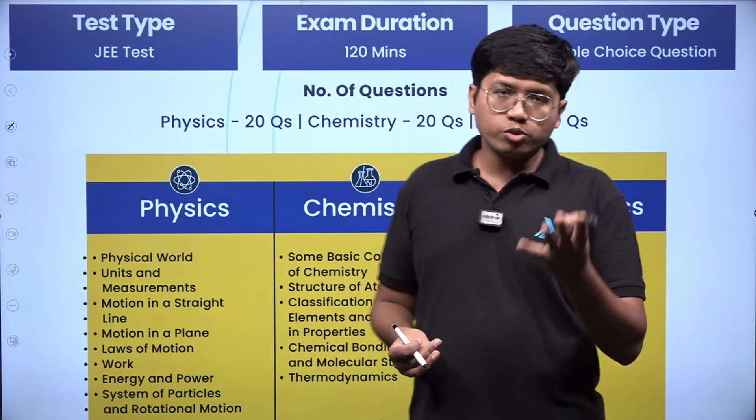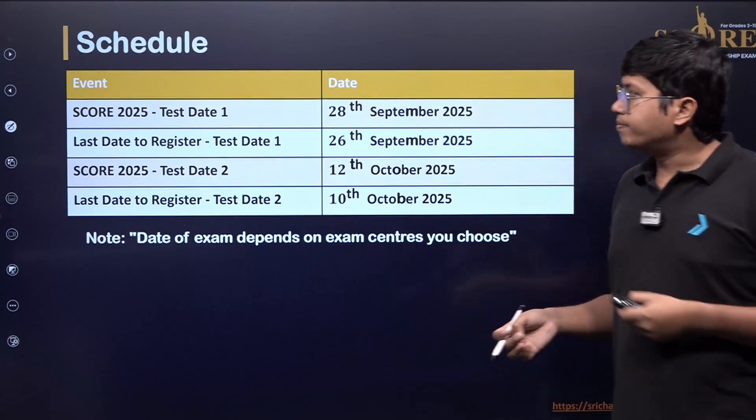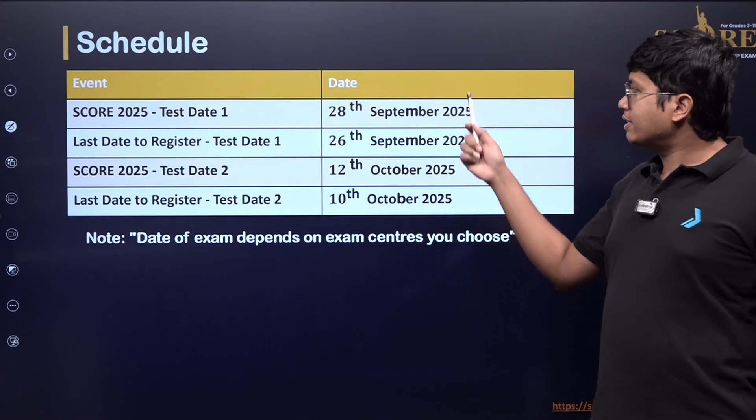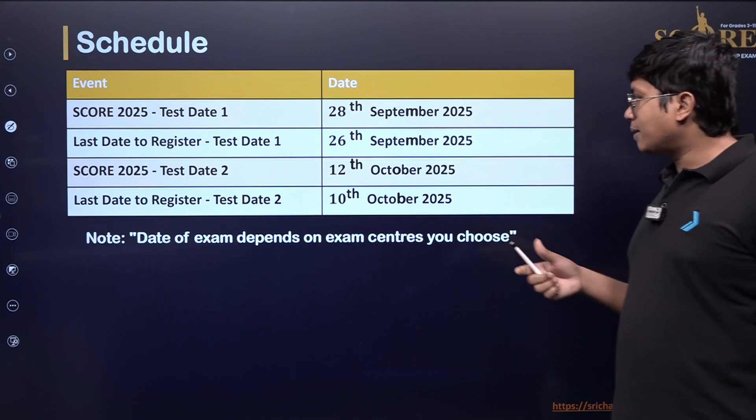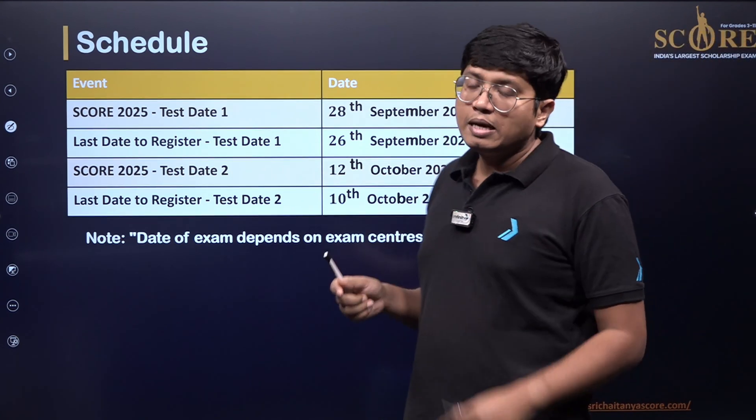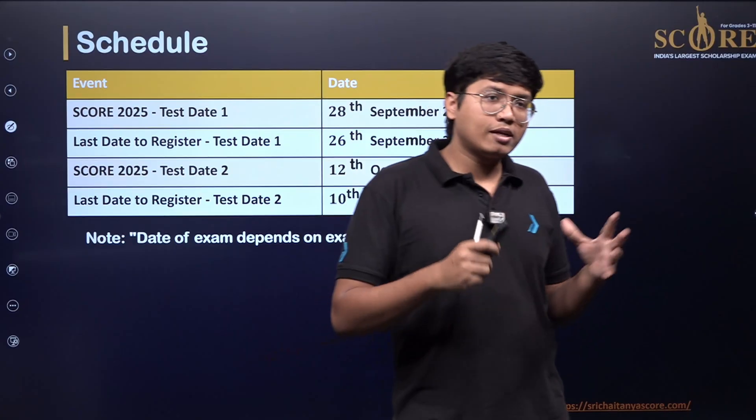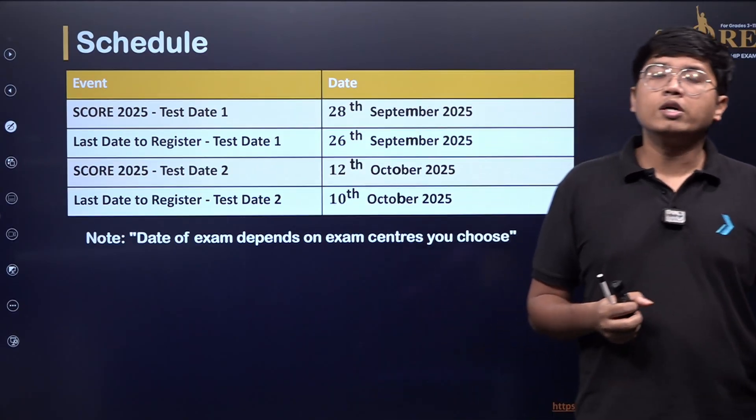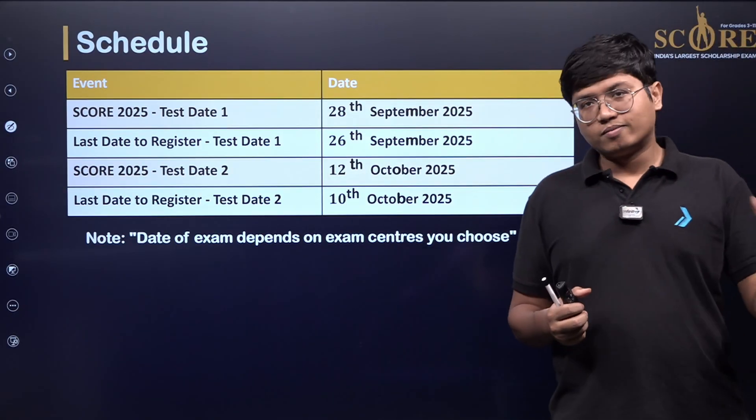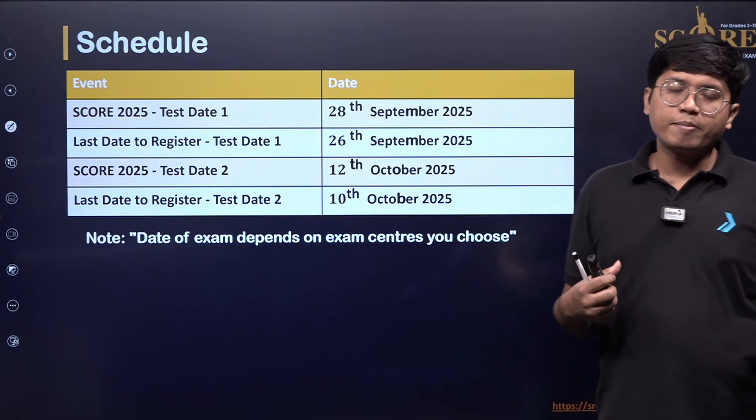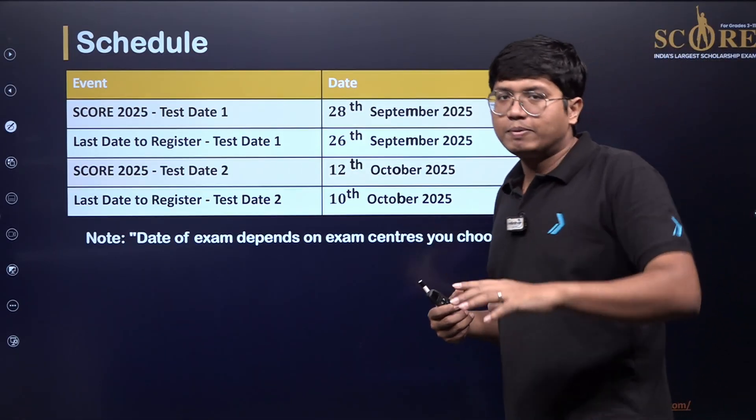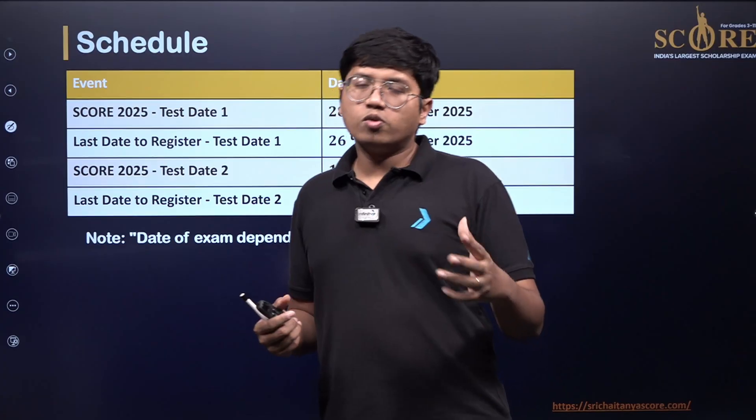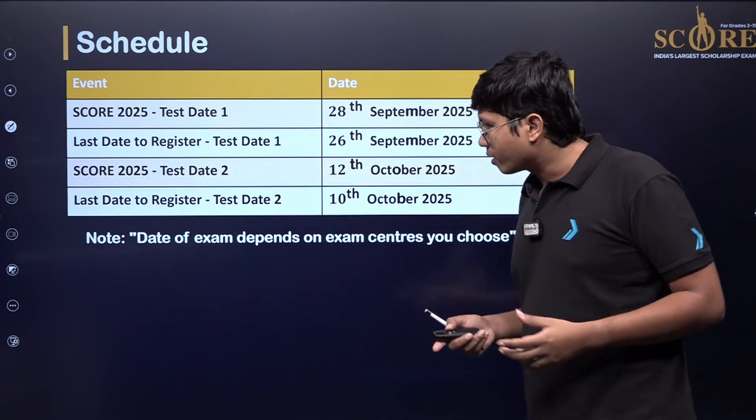You can choose; you can give your preference also. The last date to register is on 26th September and 10th October for the two tests. But please don't wait till that because almost a lakh students will appear for it. So registrations, the website might get stuck. There might be many factors. So register today. It is completely free, so you can just go over there and register for it.